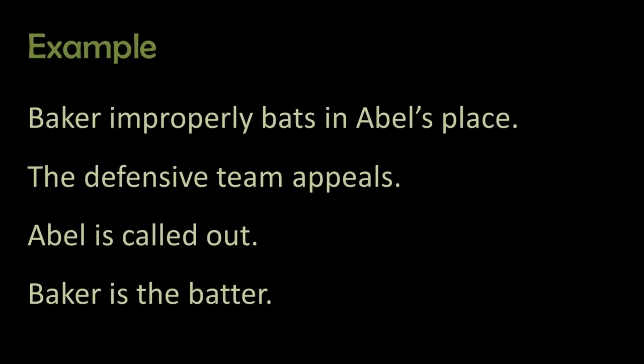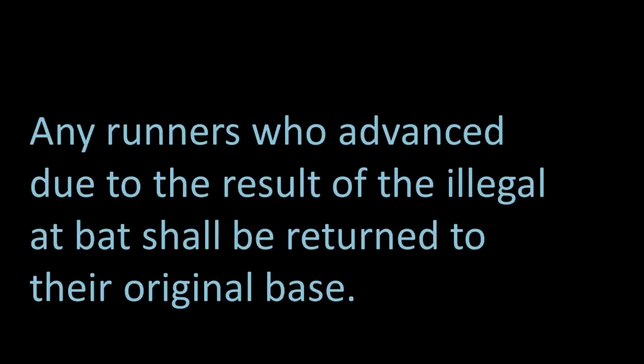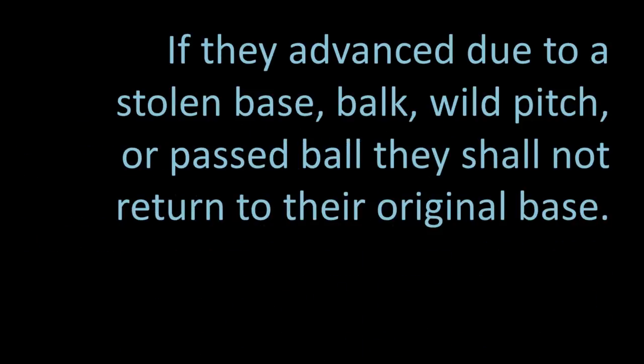Finally, if that situation does occur, any runners who advanced due to the results of the illegal at-bat should be returned to their original base. This includes anybody who scores. However, if the runners advanced during the illegal at-bat because they stole a base, or there was a balk, or a wild pitch, or a passed ball, then they do not have to return to the original base. So if Baker is up in Abel's place and hits a double with runners on first and second base, and those runners come around to score, if the team appeals immediately following that at-bat, those two runners will have to return to first and second base.